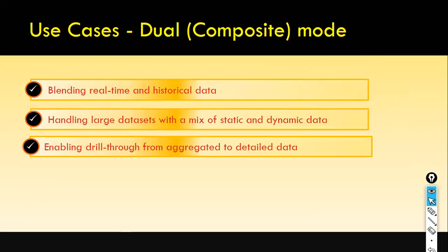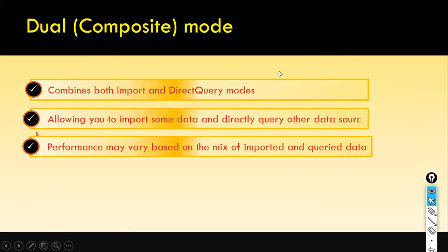The next one is the dual mode, also called composite mode. It combines both import and direct query modes. For example, you have loaded an Excel file — that's import mode; for Excel there's only one storage mode option, which is import. There is no direct query mode for Excel.